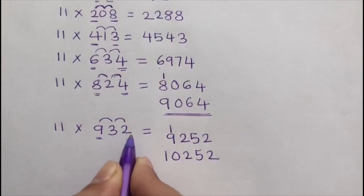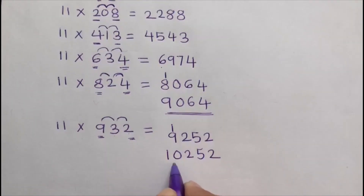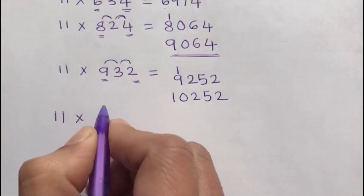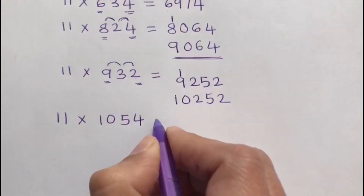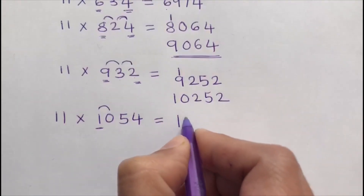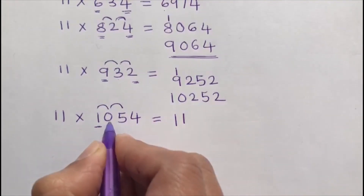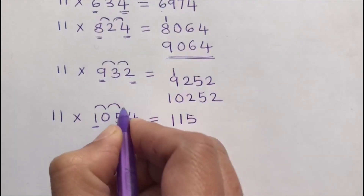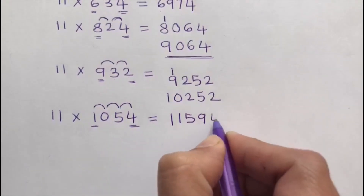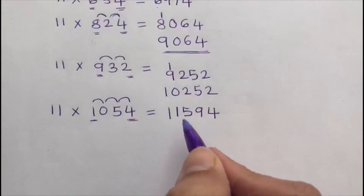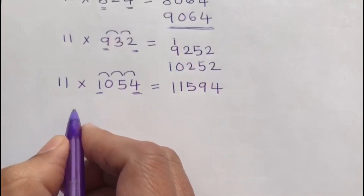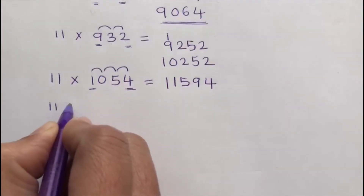Next: 11 times 1054. The first digit is 1, so I write 1. Then add 1 and 0, which gives 1. Then add 0 and 5, which gives 5. Then add 5 and 4, which gives 9. Write the last digit as 4. So we get the value 11594.